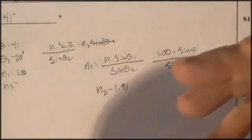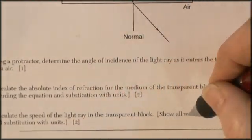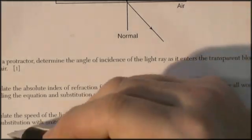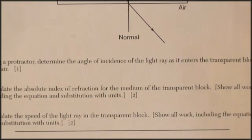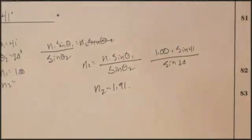Alright, let's see. Calculate the speed of light in the transparent block. Show all work including the equation and substitution with units. So now they want the speed of light. This is probably another formula somewhere.